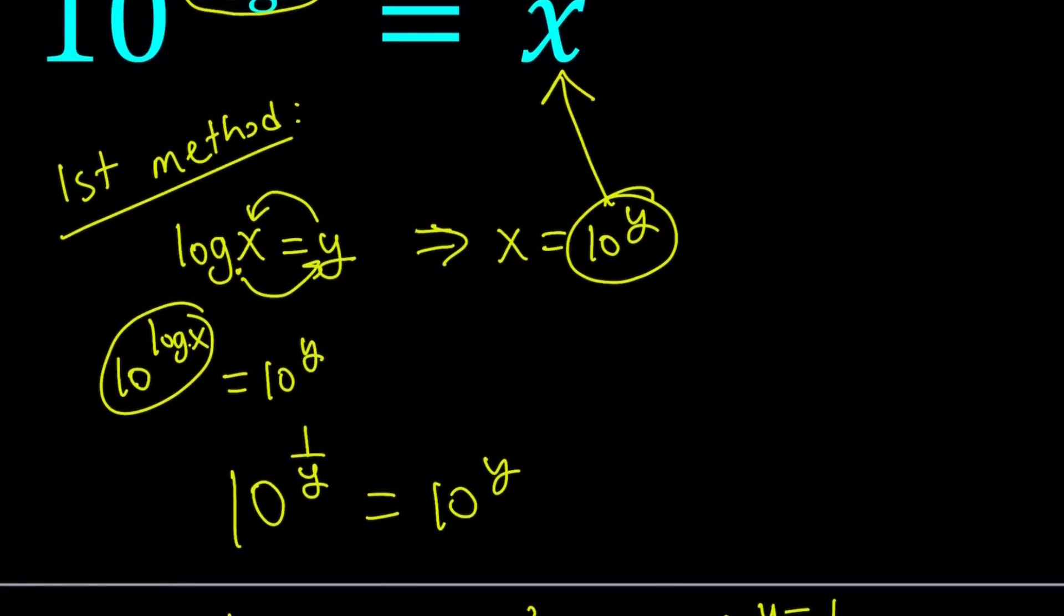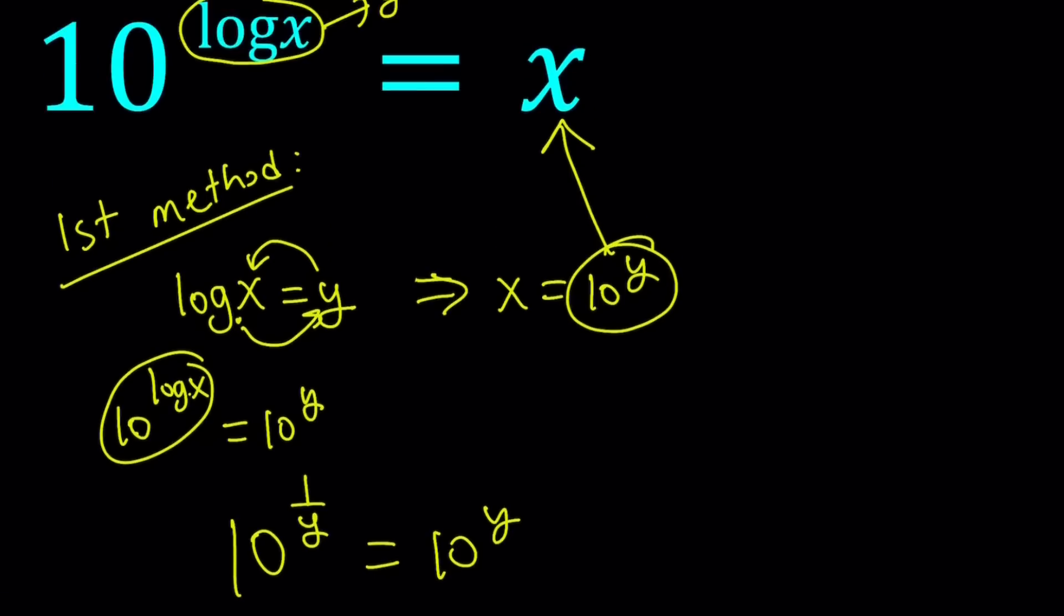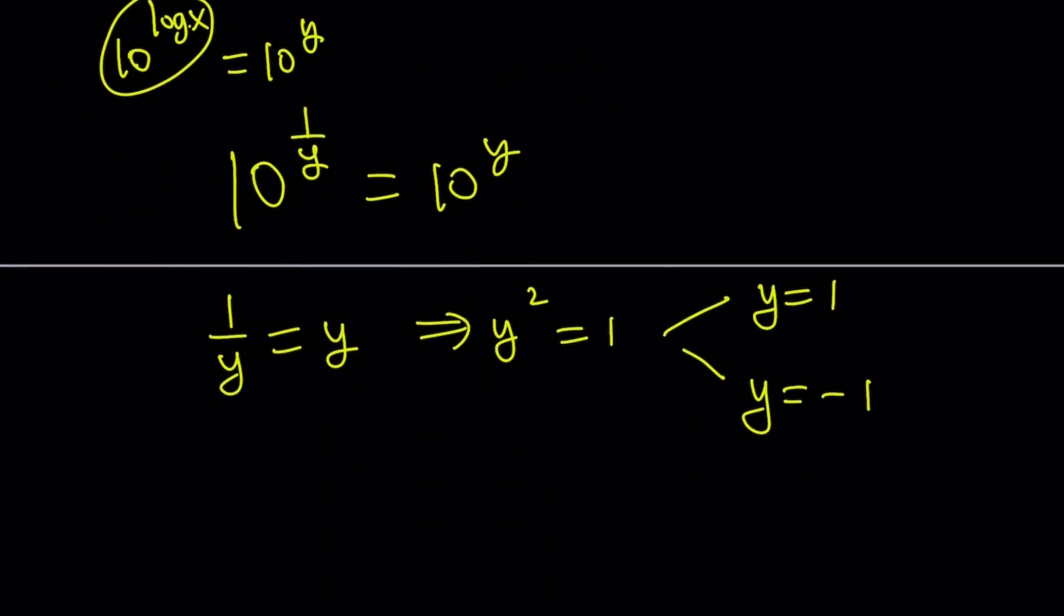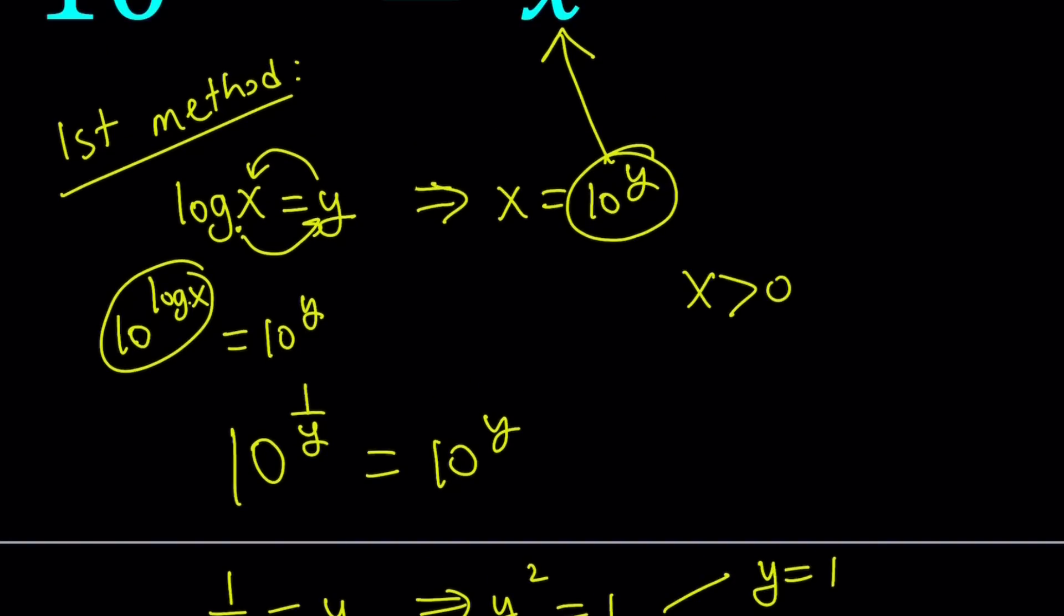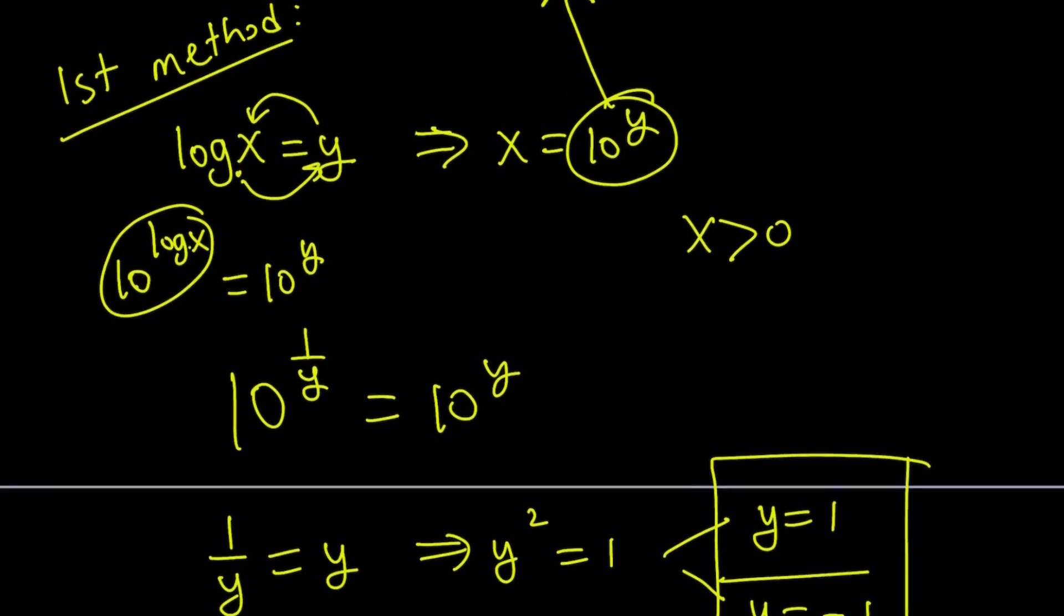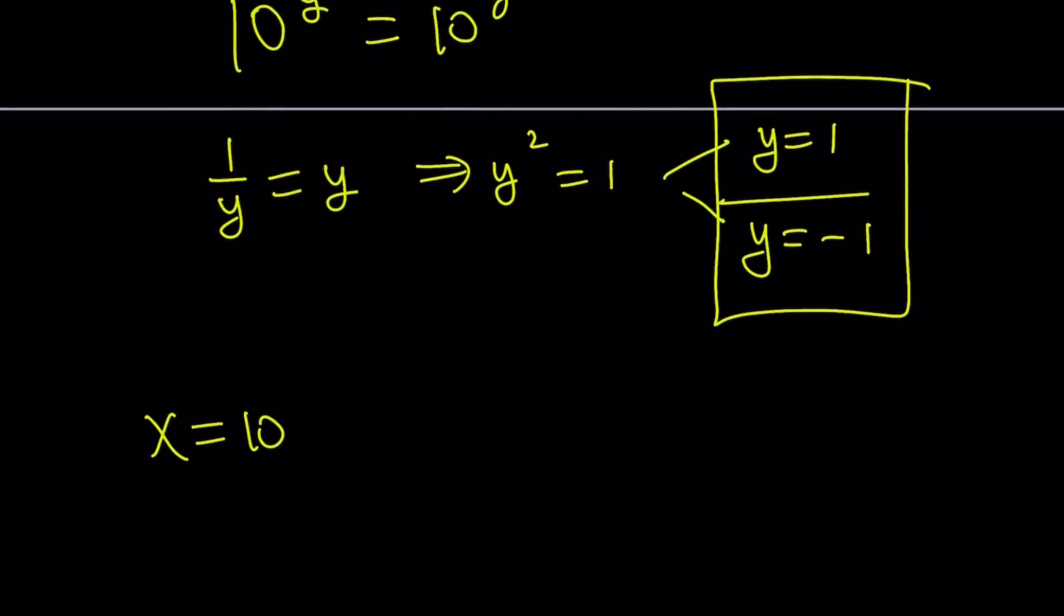Those are the only solutions but we have a problem because we have the log function and if we're solving for real x values, if x is real it has to be positive. Does that mean y also has to be positive? Not necessarily because we have to check. So x is 10 to the power y.